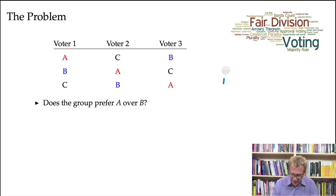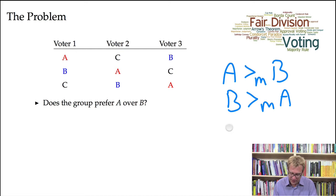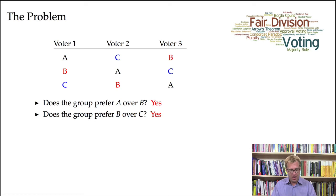And so now we can ask, does the group prefer A over B? Well, what I'm asking is, is it the case that A is ranked above B according to this majority relation or that B is ranked above A according to this majority relation? Or perhaps A is equal to B according to this majority relation? Well, that won't happen because we have an odd number of voters and we're not allowing ties. So we don't have to worry about that. So does the group prefer A over B? Well, it's easy to see that two people prefer A over B. So it's two to one, A over B. So yes, the answer is yes. A is ranked above B.